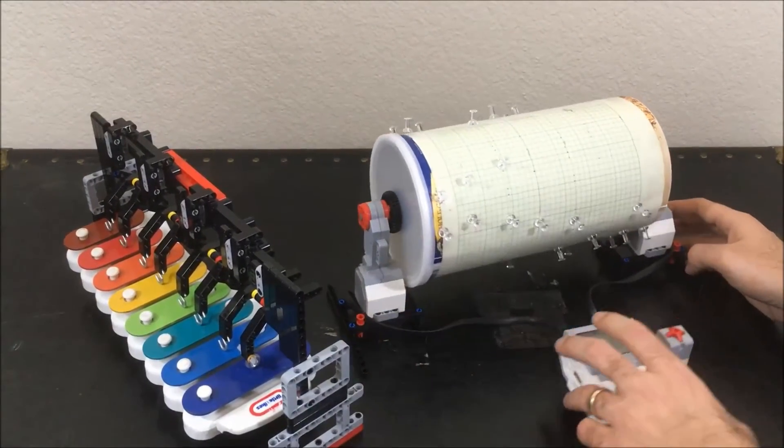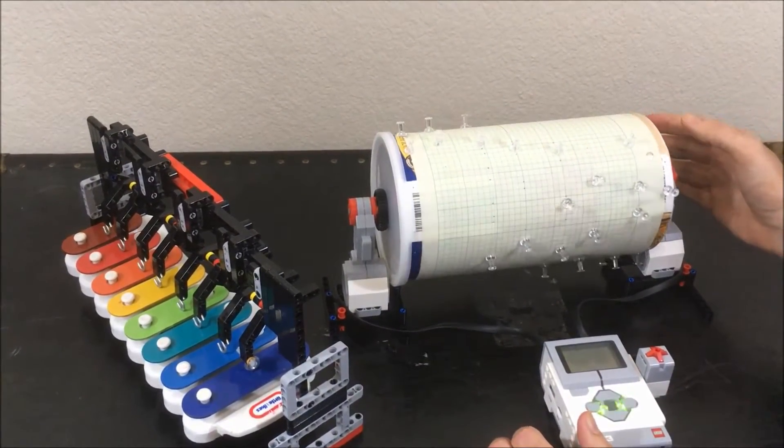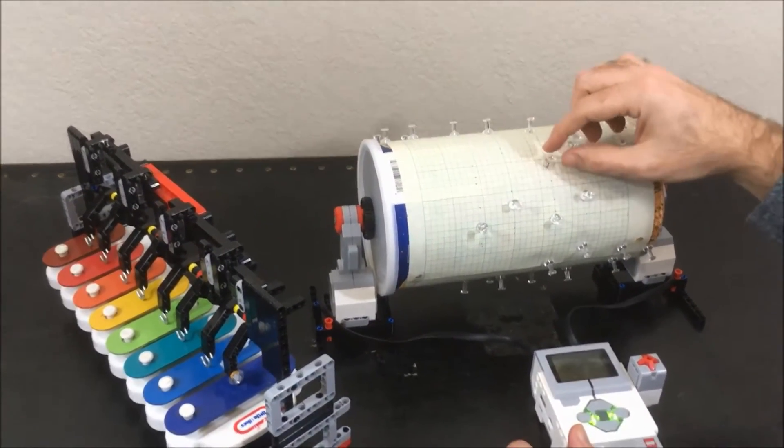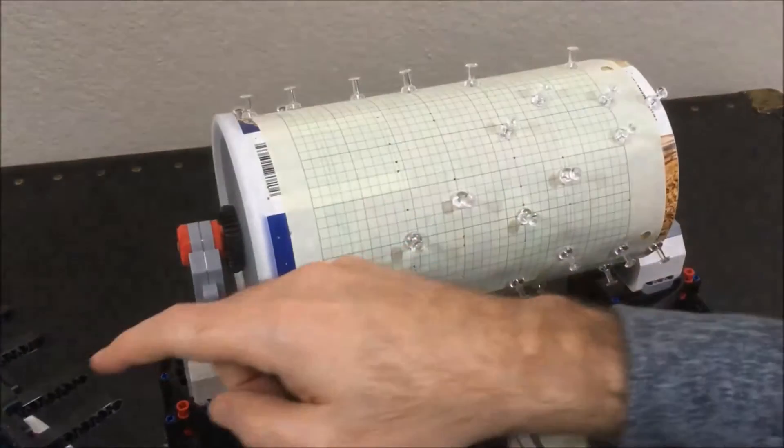The large motors are turning the drum which is an old oatmeal container covered in graph paper to mark the notes and push pins which trigger each of the notes on the xylophone.